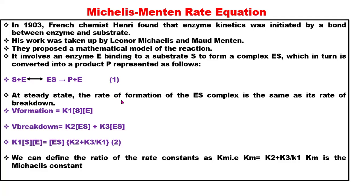In the steady state, the rate of formation of the enzyme-substrate complex equals the rate of its breakdown. We can represent the rate of formation as k₁ multiplied by substrate concentration times enzyme concentration, where k₁ is the rate constant. The rate of breakdown of the enzyme-substrate complex is k₂ plus k₃ multiplied by the enzyme-substrate complex.